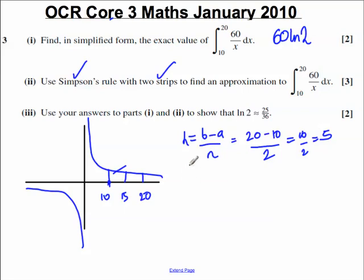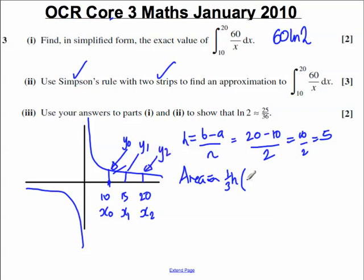So now, what does Simpson's rule tell us again? Well, Simpson's rule tells us that the area is approximately equal to a third h. The first, this here, will be the value of the function at x0, x0 is equal to 10, is y0. And the value of the function at the next ordinate, x1, will be y1. And the value of the function at the last ordinate, x2, will be y2. It tells us that the area is approximately equal to third times h.